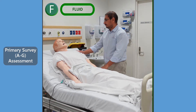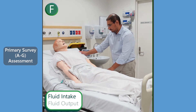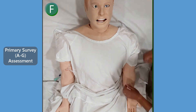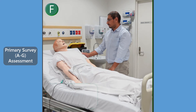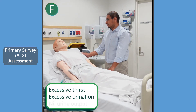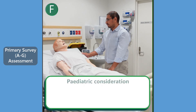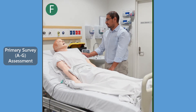The patient's fluid status comes next. Ask the patient or carer about the amount of fluids going in and fluid coming out. Assess the patient's oral mucosa and skin, looking for signs of dehydration or fluid overload. Note signs such as excessive thirst, excessive urination, or no urine output at all. Determine if the patient has any fluid restrictions in place. In the paediatric population, you can also check for the number of bottles drunk, the frequency and quality of breastfeeding, and the number of wet nappies. You can also assess the fontanelle to determine fluid status.